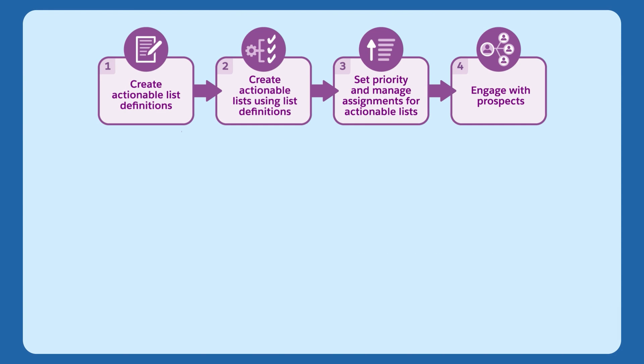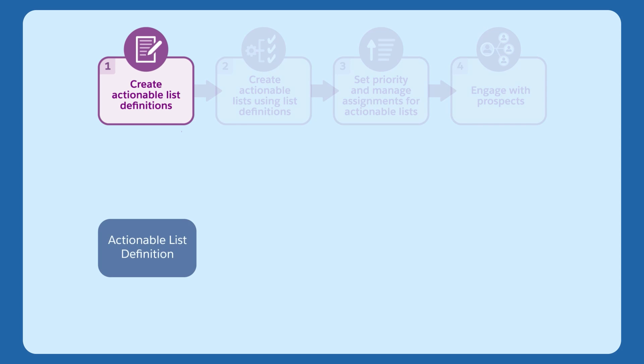Implementing actionable segmentation involves four steps. Step 1: the admin creates and activates an actionable list definition. An actionable list definition has an associated dataset containing records obtained by joining information across multiple objects according to your business requirements.